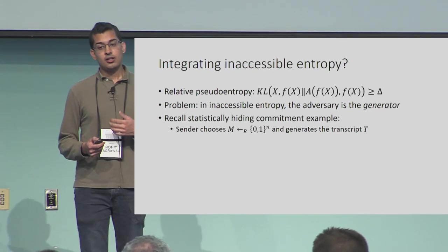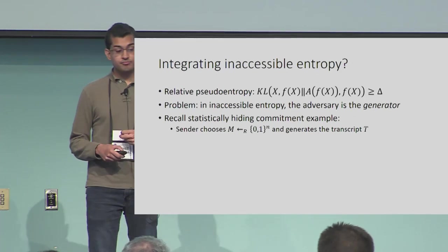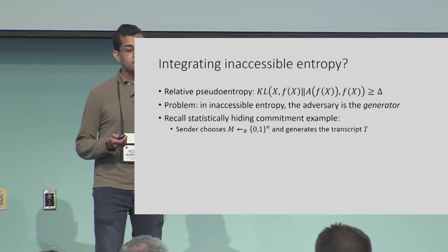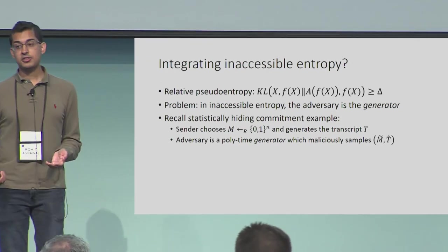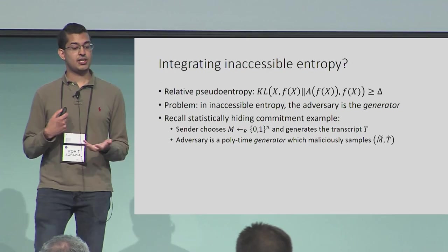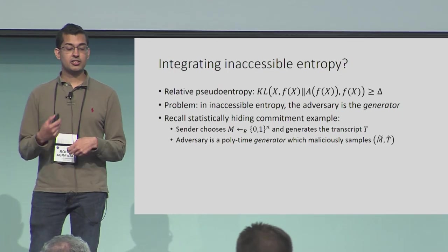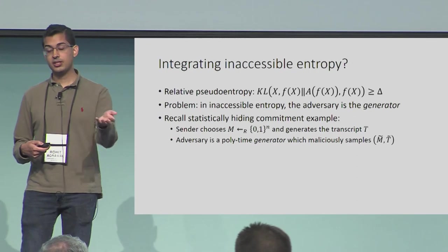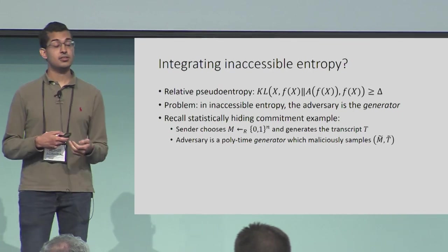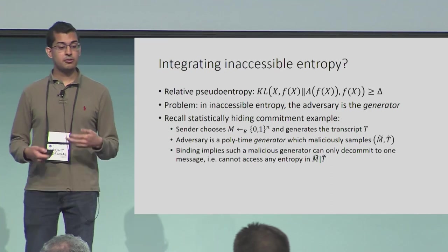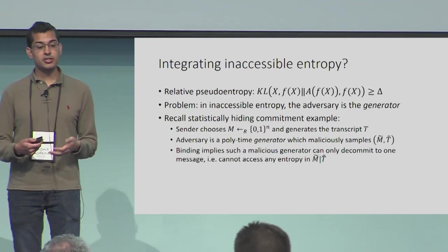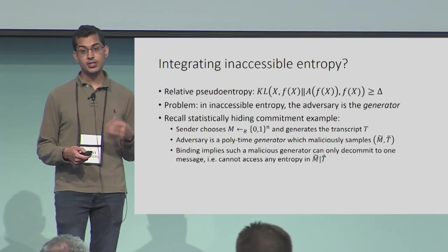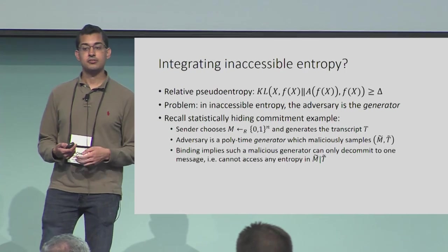To explain this, recall the example of a statistically hiding commitment, in which a sender chooses a uniformly random message, executes the protocol, and gets a transcript T. The security notion we want is a malicious adversary that does not just do this process honestly, but jointly executes the protocol and samples M and T in such a way that they want to access more entropy in their adversarial message M-tilde given the transcript T-tilde. The binding property, quantified over all these malicious generators or samplers, says that no matter what you do, if you're polytime-bounded, you can't access any entropy in the message given the transcript.